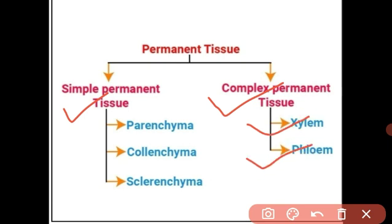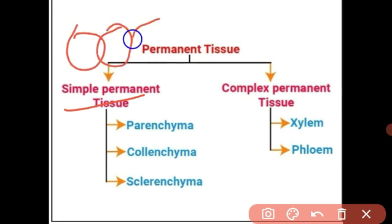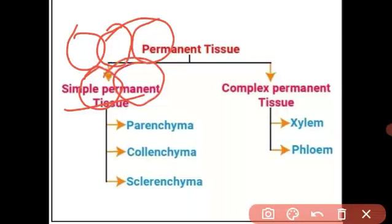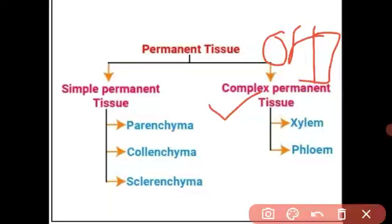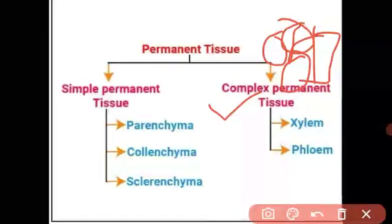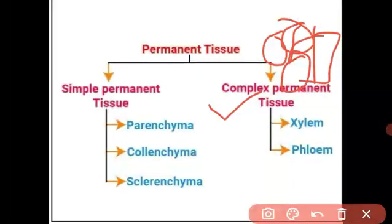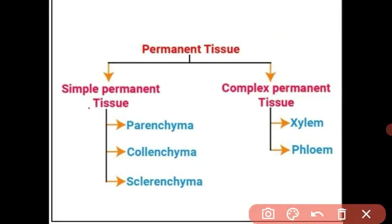In simple permanent tissue, all cells are of one type — the structure is the same and they perform the same function. But in complex permanent tissue, there are different types of cells with different structures performing different functions. What is the difference between simple and complex permanent tissue?